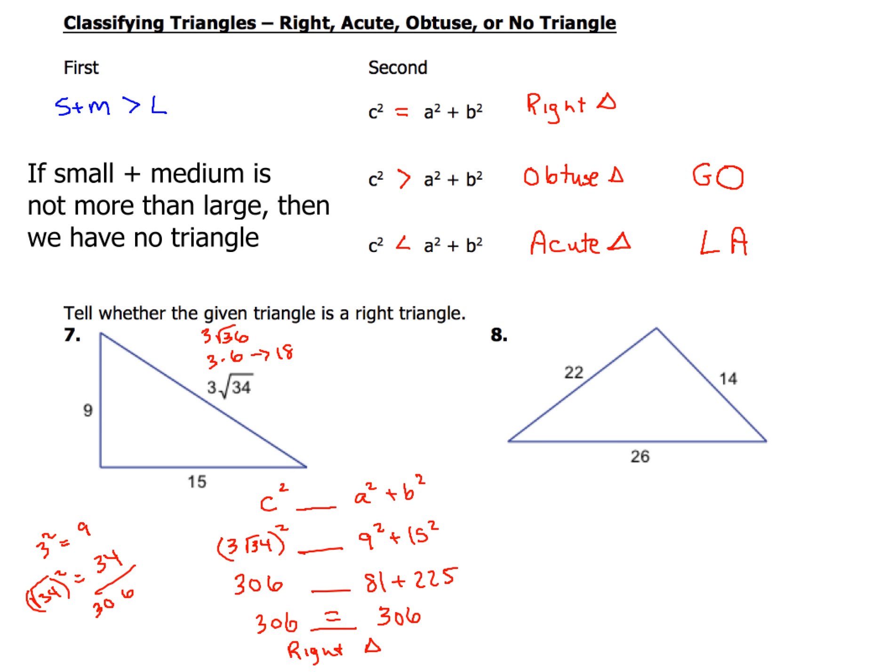All right, so here we go in example number 8. Now if I look at my three sides, 22, 14, and 26, the largest side is 26. So since that's my largest side, I need to add up 22 and 14 to make sure that their sum is more than 26, and 22 plus 14 gives you 36, and 36 is definitely more than our largest side of 26.